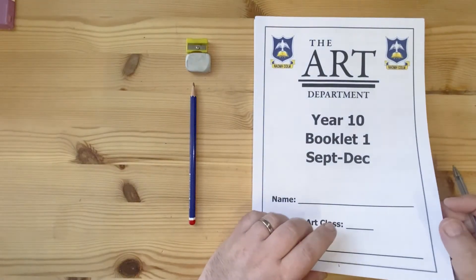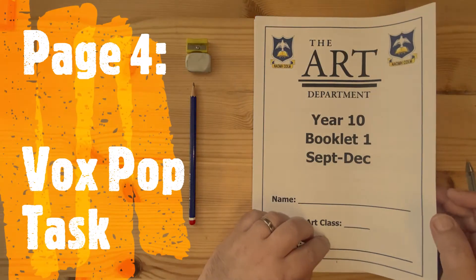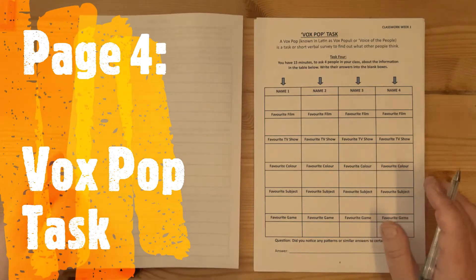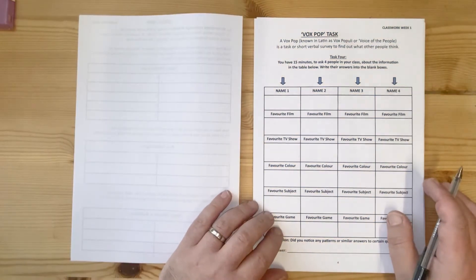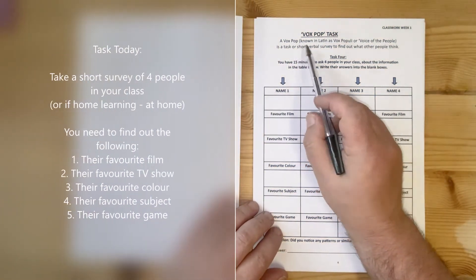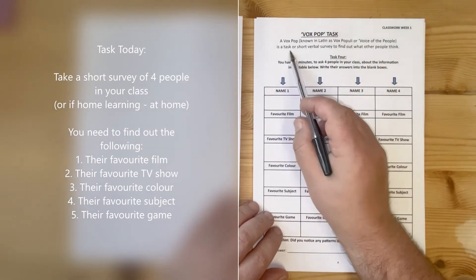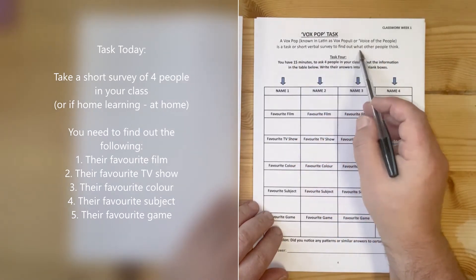Hi Year 10, this is Mr Corbett here from Studio at Home. Today we're going to be looking at page four, and this is a vox pop task. Basically, a vox pop is known in Latin as vox populi, or voices of the people, and it's a short task or a short verbal summary to find out what people think.